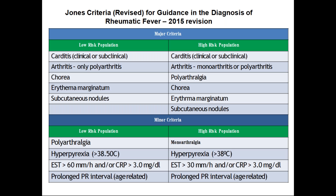For arthritis in low-risk population, only polyarthritis qualifies as a major criterion — not single joint involvement. Also included are chorea, erythema marginatum, and subcutaneous nodules. In high-risk population, the criteria remain the same except for arthritis: even monoarthritis qualifies as a major criterion, and arthralgia can be taken as a minor criterion — this is the key difference.